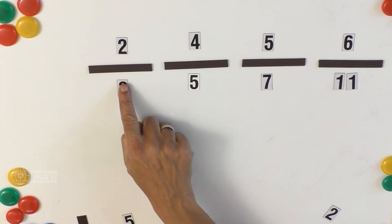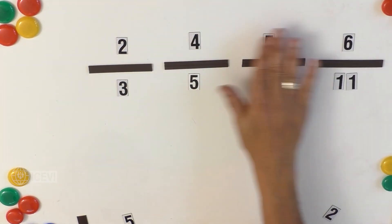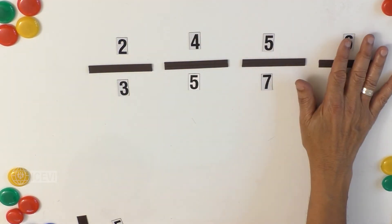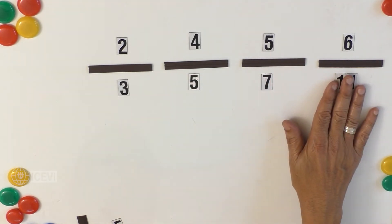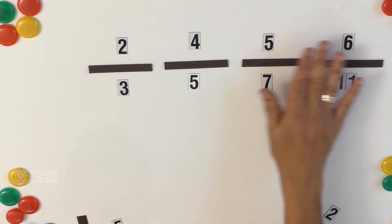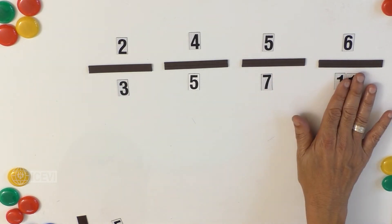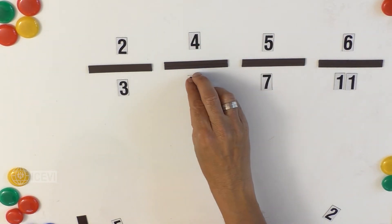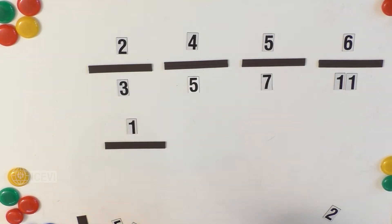Now we have four fractions: two by three, four by five, five by seven, and six by eleven. These numbers have Braille markings so that a visually impaired child can explore and understand. Is there any similarity between these fractions? No — the denominators are different and the numerators are different. Since the denominators are different, we call them 'unlike fractions.'